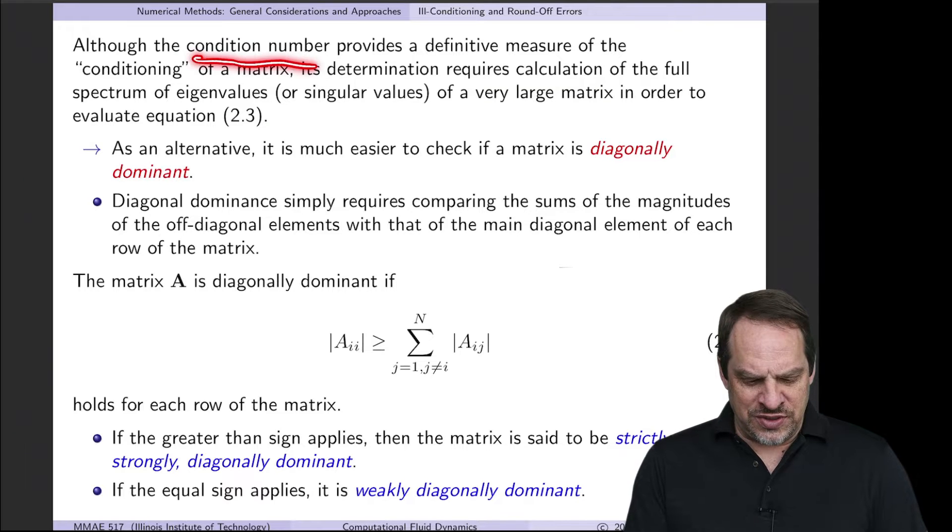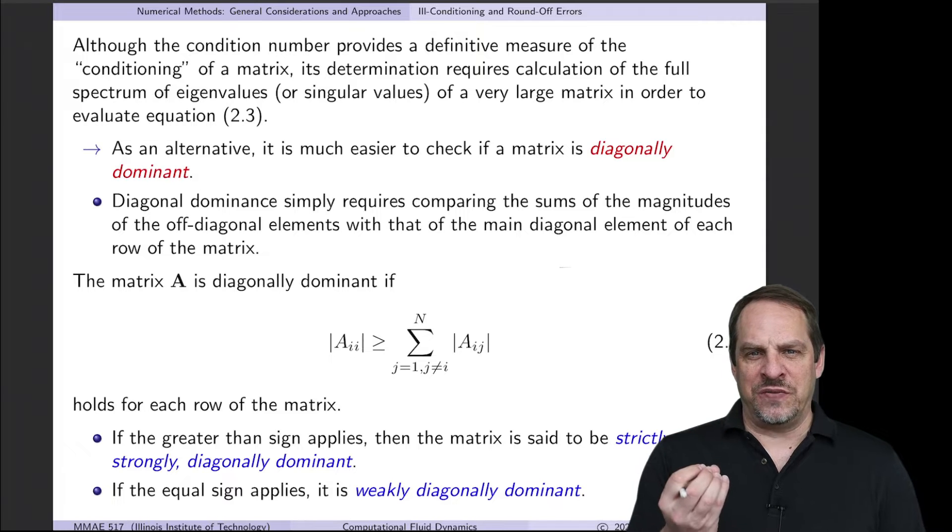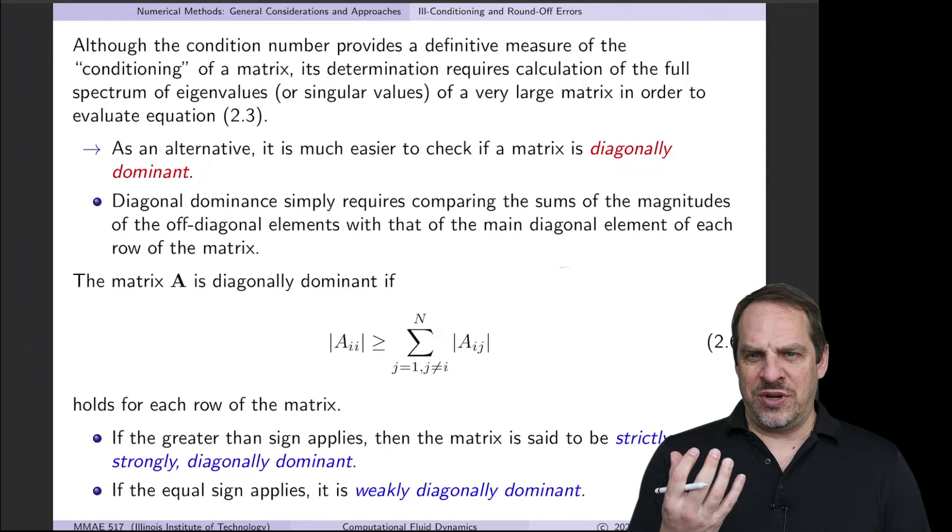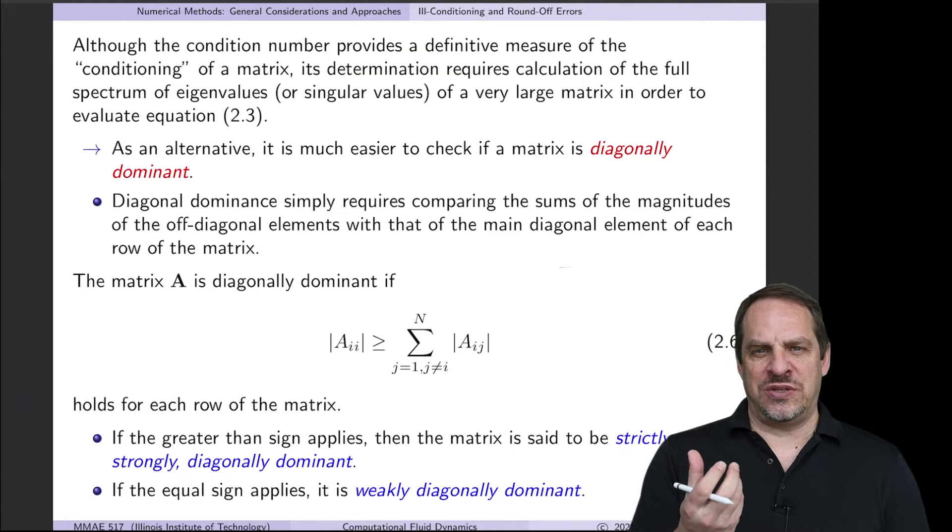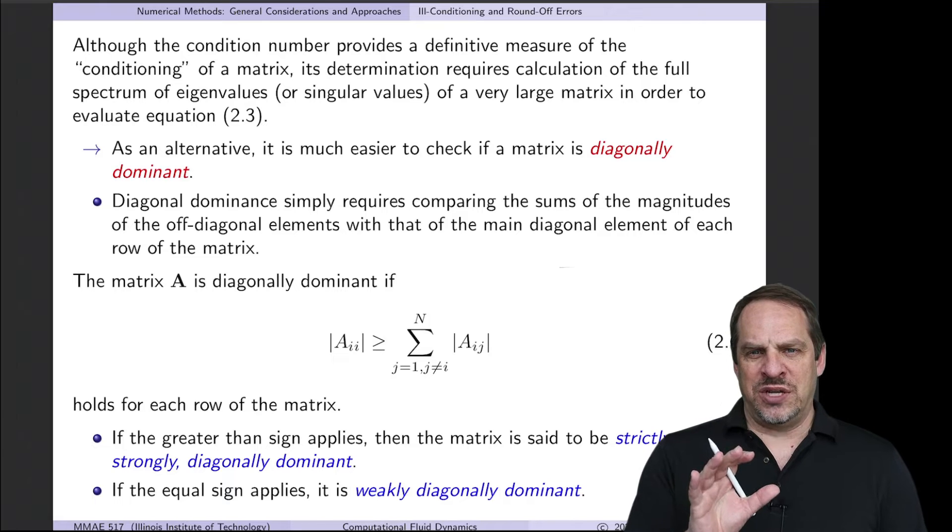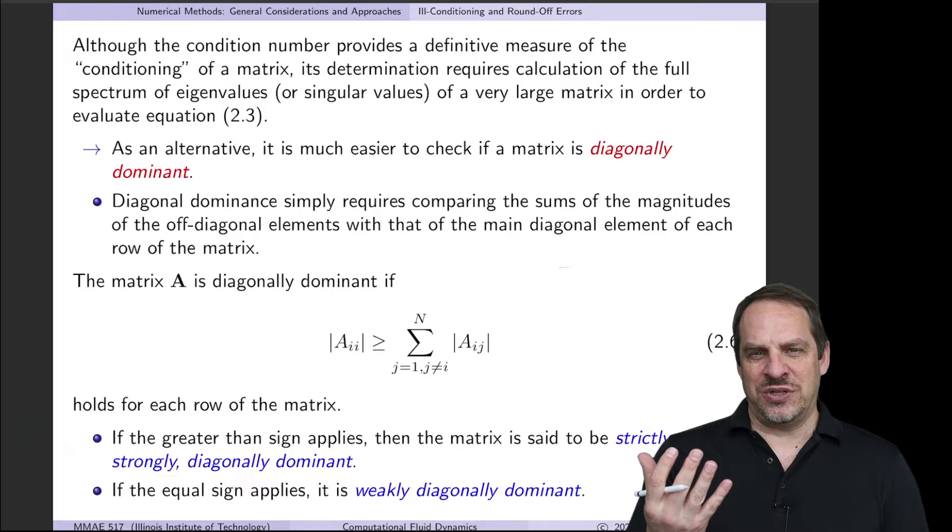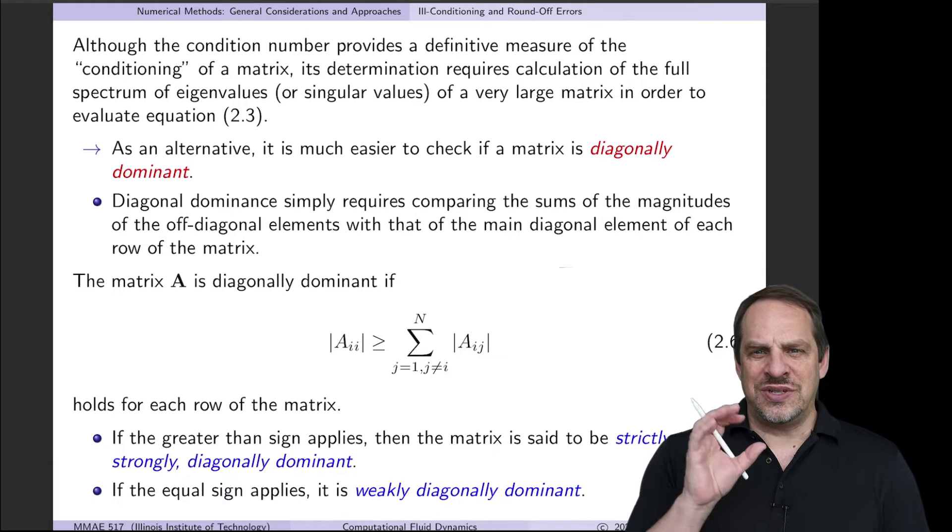Although the condition number is indeed a very definitive measure of the conditioning of a matrix, it tells us a lot of information. Remember we showed how it can even tell us how many decimal places of accuracy we expect to lose when we, for example, invert a matrix. But it requires a lot of computation, so we have to get the full spectrum of eigenvalues or singular values of a matrix in order to check the condition number. And that amount of computation is on par with solving the system of equations that we're seeking. So as a diagnostic, it's a lot of extra computation.